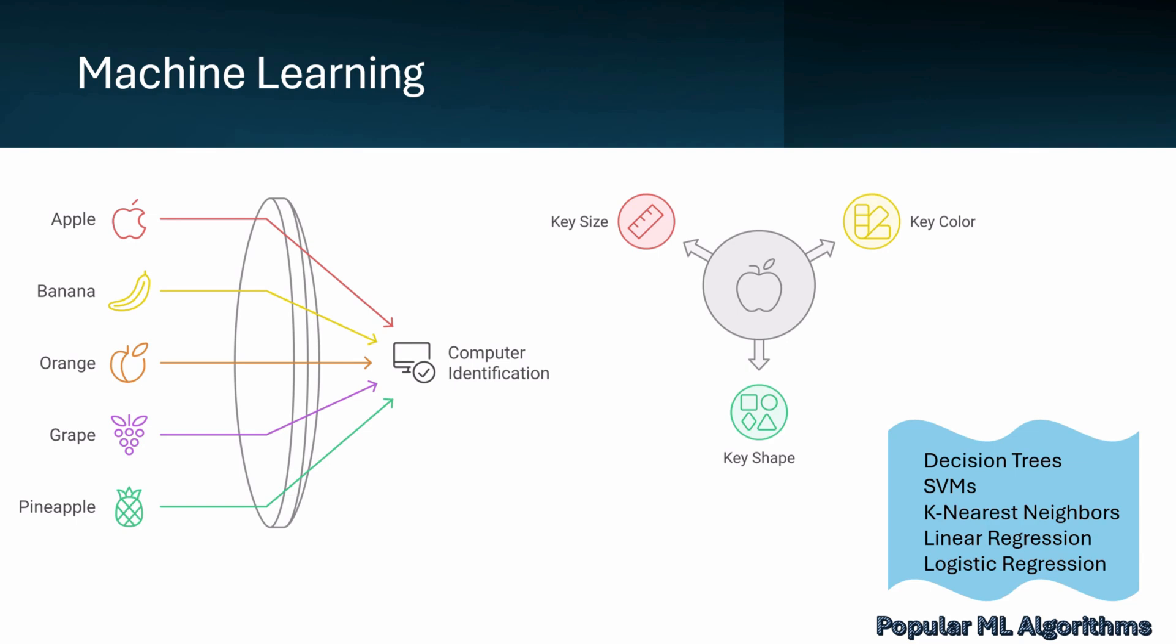Machine learning is a field focused on teaching computers to learn from data, similar to how we teach a child to recognize different fruits by showing them examples. For instance, if you show a child pictures of apples, bananas, and oranges, they eventually learn to identify these fruits independently. This process mirrors machine learning, where computers recognize patterns in data to make predictions or decisions.